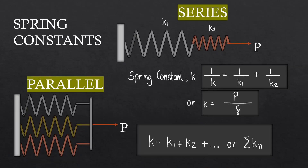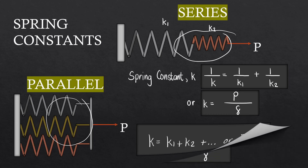In this lesson, we'll focus on spring constants. We can actually connect different springs in two ways: a series connection or a parallel connection. For these connections, the calculation of the equivalent or effective spring constant will vary. Let's first look at a series connection.